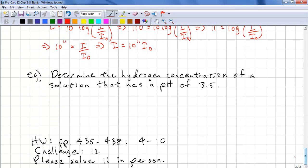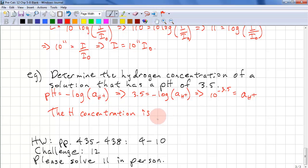Last example. Determine the hydrogen concentration of a solution that has a pH of 3.5. So we have pH equals minus log A H plus. Substitute our values. 3.5 equals minus log A H plus. Let's exponentiate both sides. We have 10 to the power of negative 3.5 equals A H plus. So the hydrogen concentration is 10 to the negative 3.5.